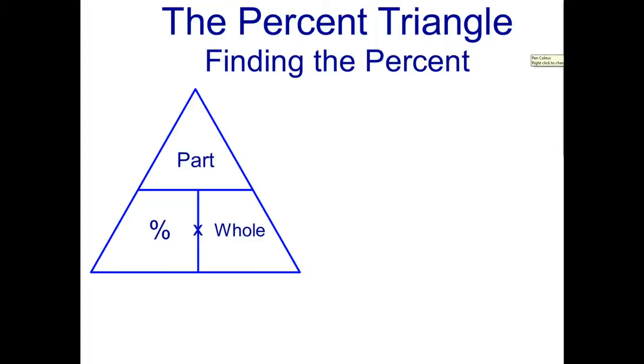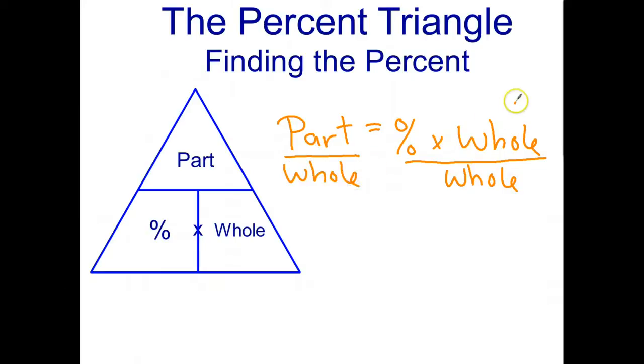Now if we're trying to find the percent, it turns out we can use the same formula but we have to rewrite it. So we'll start by writing part equals percent times whole. Now in this problem I'm trying to find the percent. So if we remember how we solve equations, to get the percent—at the moment it is multiplied by the whole—the opposite of multiplying by the whole is dividing by the whole, because multiplying and dividing cancel each other out. The whole crosses out, and there's my formula for percent. So the percent equals part divided by whole.